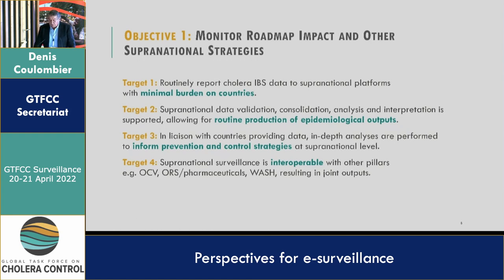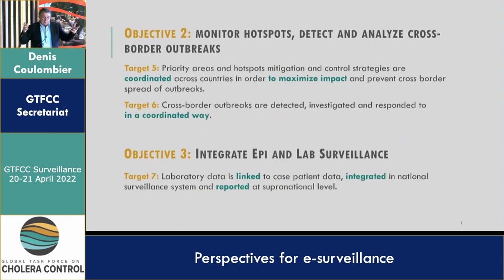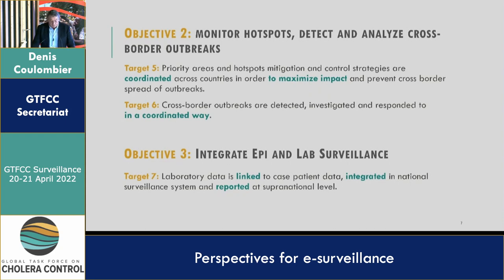Objective two — monitor hotspots and detect and analyze cross-border outbreaks. The first target is to make data available across borders so we can maximize impact and prevent cross-border spread of outbreaks, including activating activities when increased incidence is seen at borders. Once an outbreak has been declared in a country, the system should allow coordination and provision of data on both sides of the border in a rapid reaction.